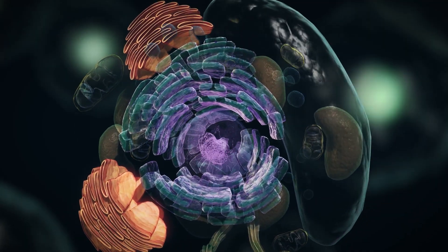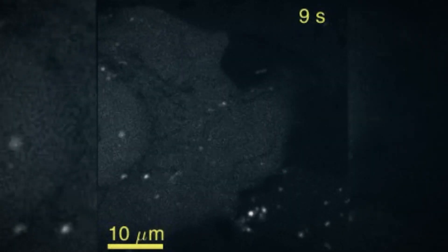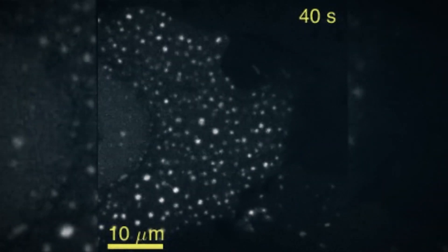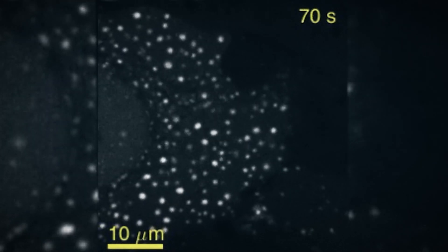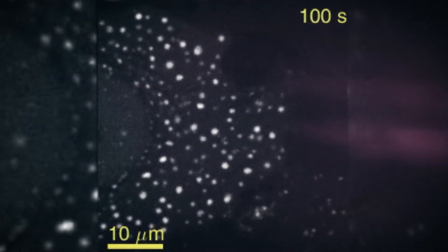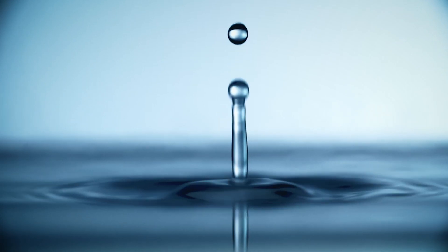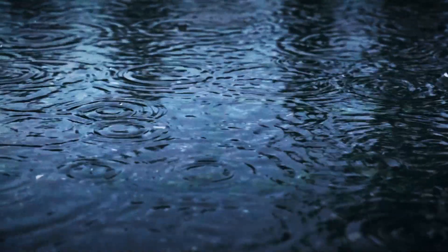Organelles are the little organs of cells. We discovered that biomolecules organize themselves in the absence of membranes into liquid droplets called membrane-less organelles through a process known as liquid-liquid phase separation. This process is pretty much the same physics that governs how water molecules condense into droplets and rain.